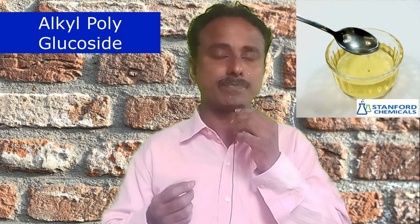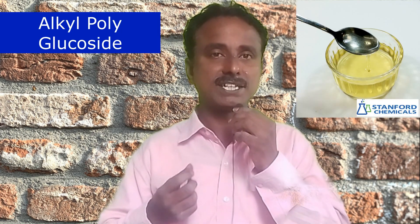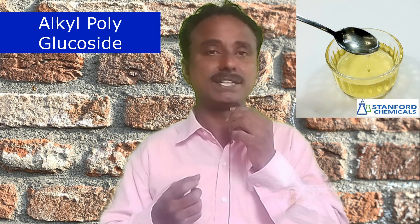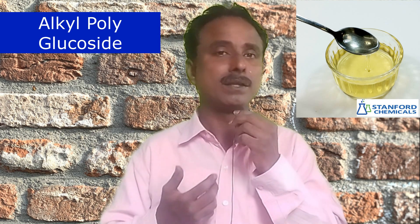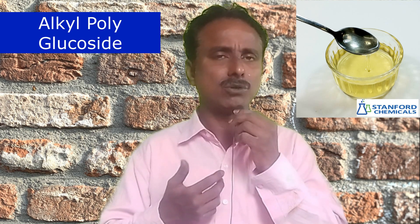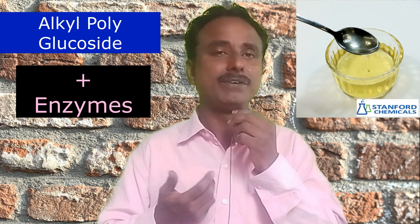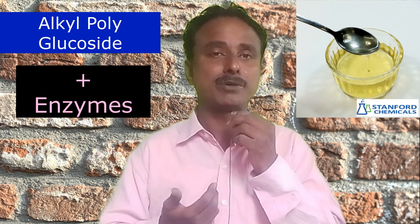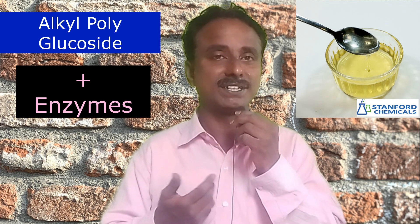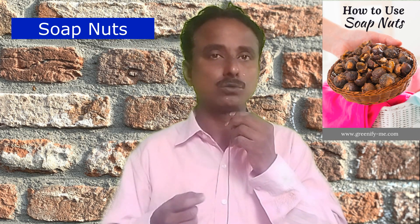The first choice is alkyl polyglucoside. This is a versatile surfactant and natural plant extract. By combining alkyl polyglucoside with enzymes, we can formulate many cleaning products including liquid detergent, dishwasher, multi-surface cleaner, etc.